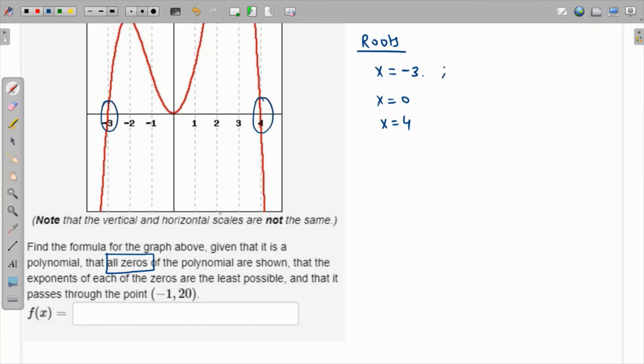The least possible exponent, so the least multiplicity if the multiplicity is odd, is one. So the multiplicity of these roots is going to be one and one. And for zero, it's turning and touching back, so even—the least even number is two.